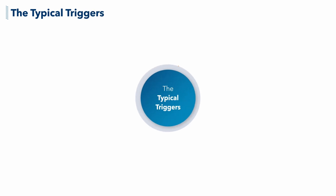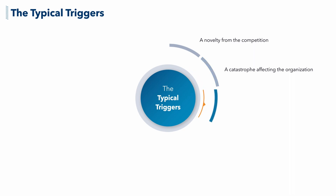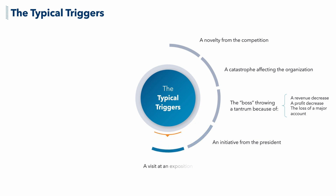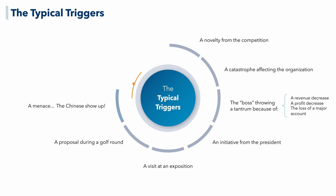There are multiple triggers for innovation. One could be a novelty from your competition — if the offering is distinctive, your company may want to react with something better. It can also be a catastrophe like the pandemic, or your boss reacting to revenue decrease, profit decrease, rising currency, new tariffs, or the loss of a major account. It could be a company-wide initiative, a pet project, or something eye-catching at a trade fair. Unfortunately, innovation is often initiated by reaction rather than a proactive step towards ambitious visions — this is what the front-end of innovation is meant to change.